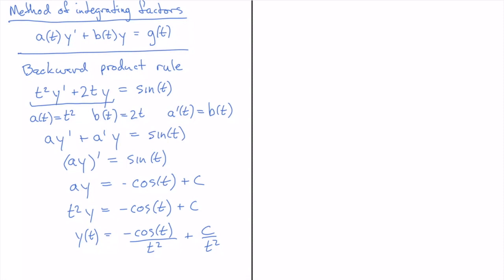We're not always going to get perfect cases like that, so let's look at a few other examples. Here's an equation that is similar but not exactly the same: t·y' + 2y = 1. Notice that the derivative of t is not 2, it's 1, so we don't have the same relationship as before. The left-hand side is not the result of a product rule. Think about what function you could multiply this equation through by to make the left-hand side a perfect product rule result.